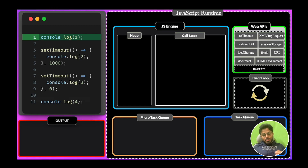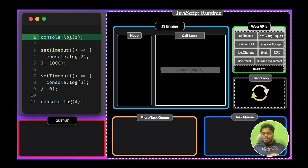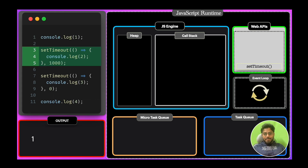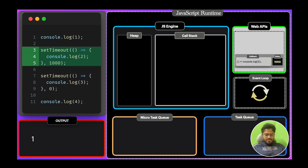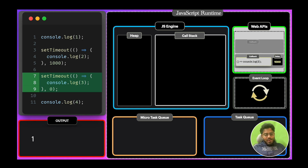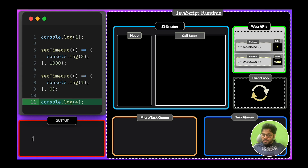Our code will be pushed to the call stack line by line and executes. The first console statement will be pushed to call stack and executes to output 1. Then it pushes the setTimeout, and as setTimeout is a web API, it registers a callback with a 1000ms delay as specified. It then goes to the second setTimeout, also a web API, registering a callback with a delay of 0ms. Our cursor then goes to the next line, which is pushed to call stack and executes to output 4.